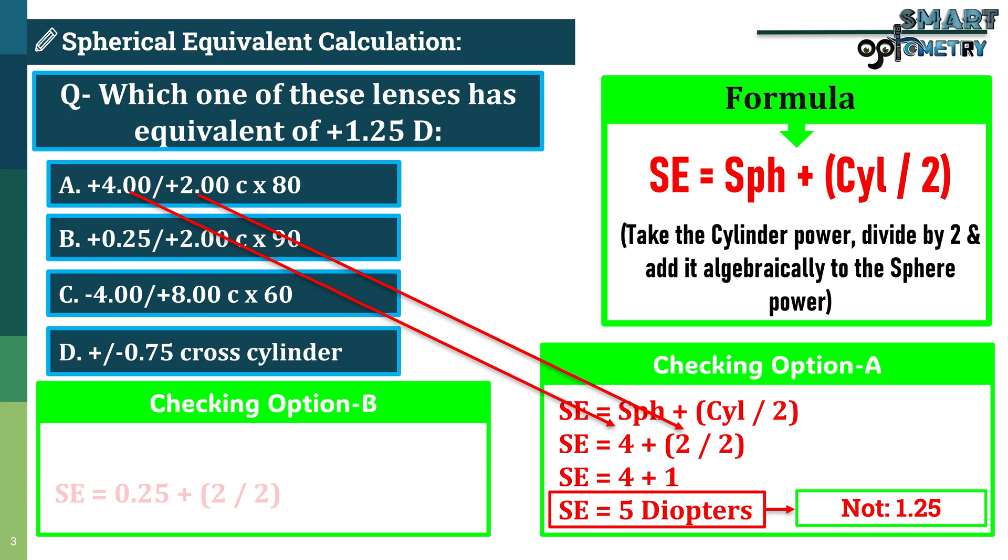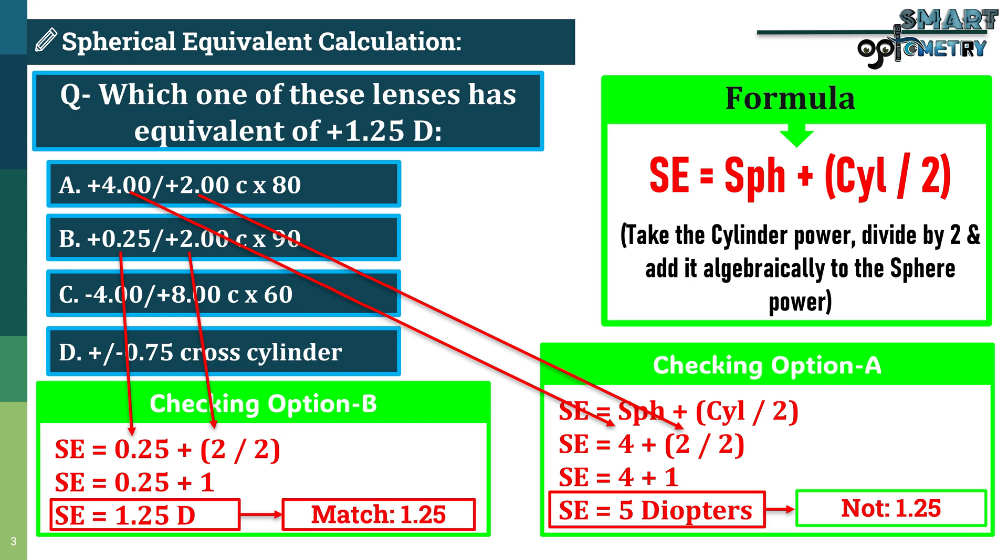Now, let's check option B. The sphere is plus 0.25. The cylinder is plus 2. Half of plus 2 is plus 1. So, plus 0.25 plus 1 equals plus 1.25 diopters. This matches our question perfectly.